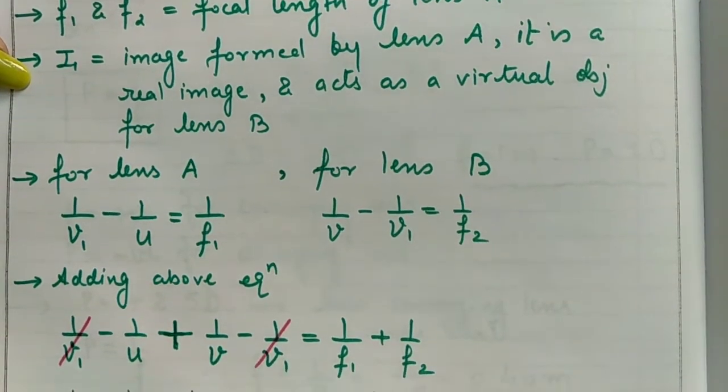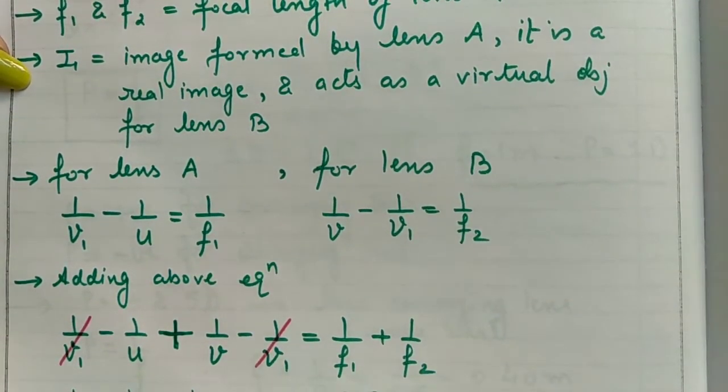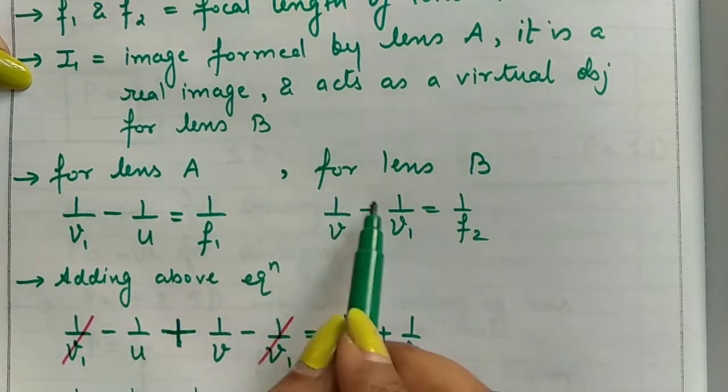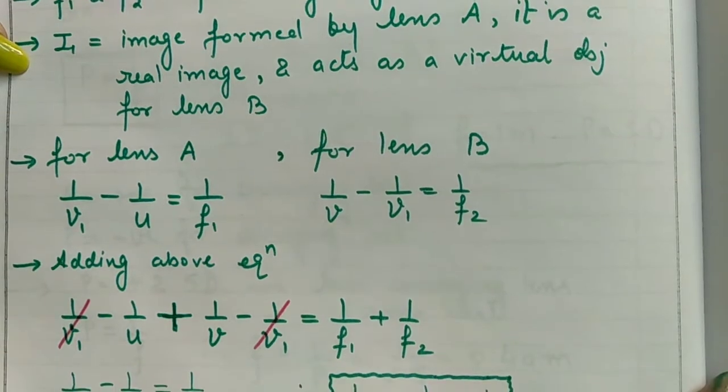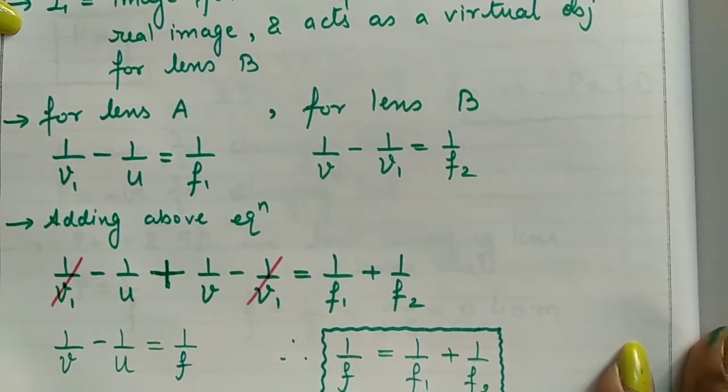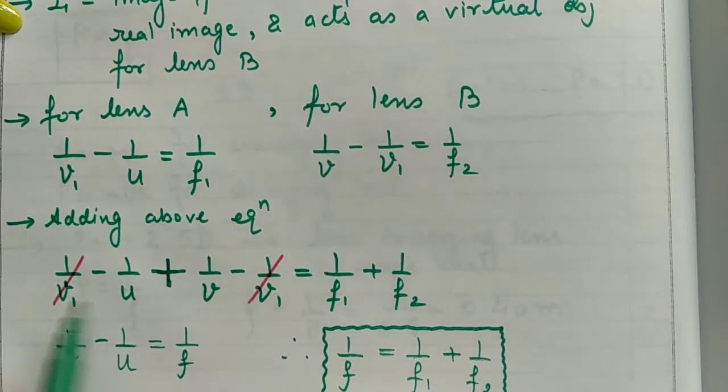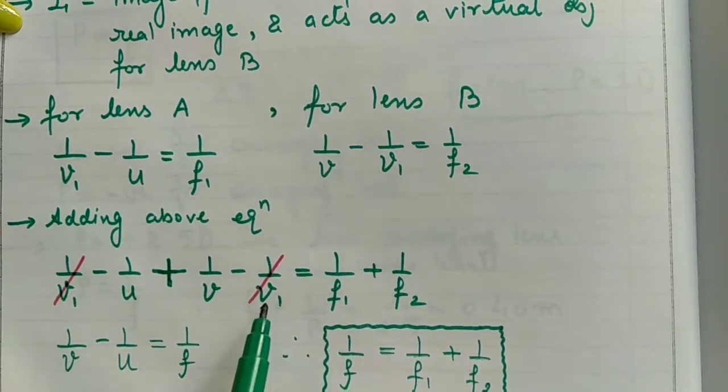Now I'll add them. Since both lenses are in combination, I'll add both equations. This whole equation added with that equals 1 upon F1 plus 1 upon F2. While adding, I'll observe that these two distances get cancelled. This is positive and this is negative, so these two get cancelled. So 1 upon V minus 1 upon U equals 1 upon F.